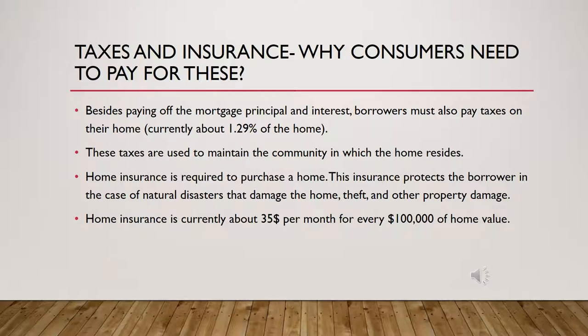Here we learn about taxes and insurance and why consumers need to pay for these. Besides paying off the mortgage principal and interest, borrowers must also pay taxes on their home. Currently, it's about 1.29% of the home value each month. These taxes are used to maintain the community in which the home resides. Home insurance is required to purchase a home — you won't get approval for a mortgage if you don't have home insurance. This insurance protects the homeowner in case of natural disasters that damage the home, death, and other property damage. Home insurance is currently about $35 a month for every $100,000 of the home value.